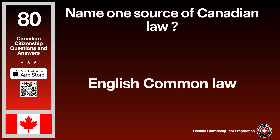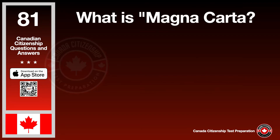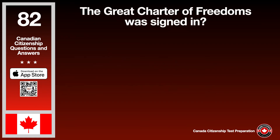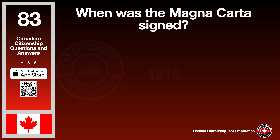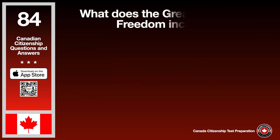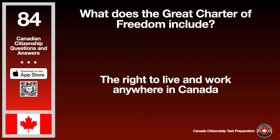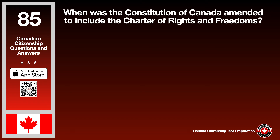Name one source of Canadian law. The answer is English common law. What is Magna Carta? The answer is the Great Charter of Freedoms. The Great Charter of Freedoms was signed in England. When was the Magna Carta signed? The answer is 1215. What does the Great Charter of Freedom include? The answer is the right to live and work anywhere in Canada. When was the Constitution of Canada amended to include the Charter of Rights and Freedoms? The answer is 1982.